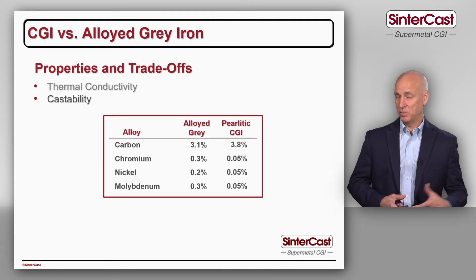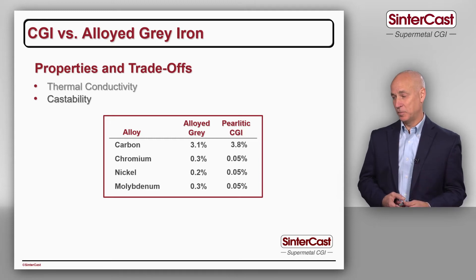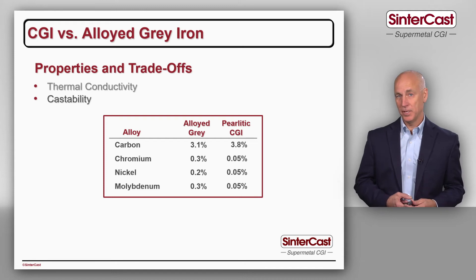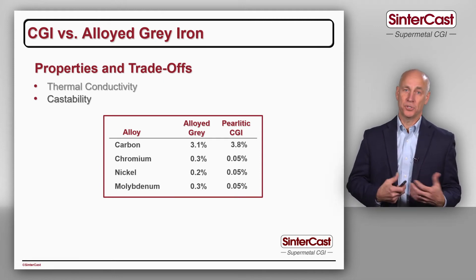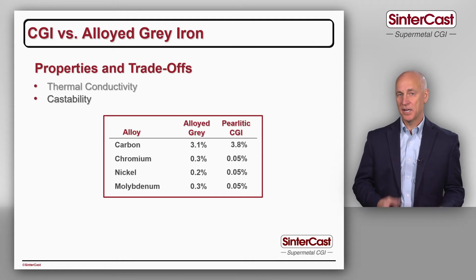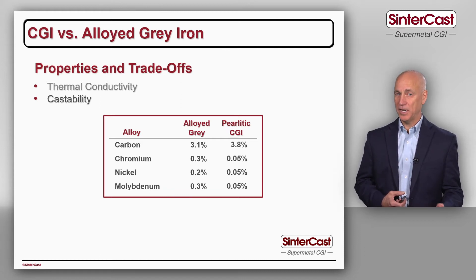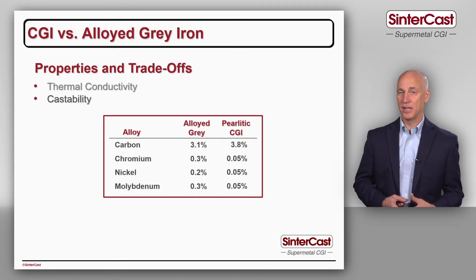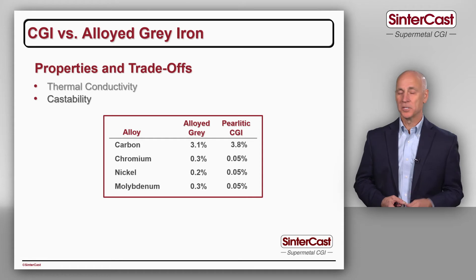Here is a small summary of potential chemistry for an alloyed grey cast iron: lower carbon content, 0.3% chrome, 0.3% molybdenum, and perhaps 0.2% nickel. The lower carbon content makes shrinkage more likely, and these alloying elements — chrome, nickel, and molybdenum — segregate to the last areas of the casting to solidify. In those areas, there is no graphite expansion, so we have the risk of microporosity. With CGI having a higher carbon content and fewer alloying elements segregating to last-solidifying areas, we have quite good castability and shrinkage resistance. In the end, the porosity formation of alloyed grey iron and CGI is effectively the same.